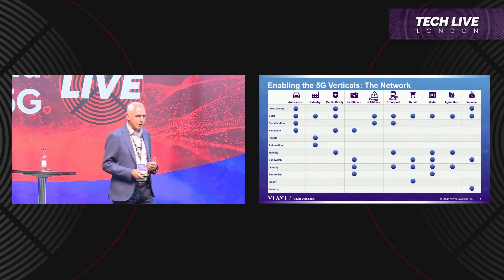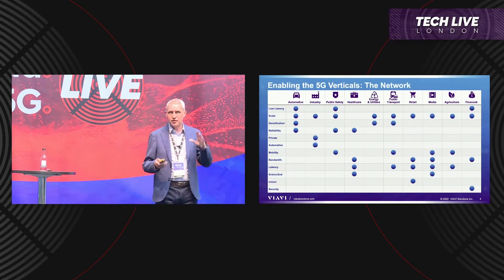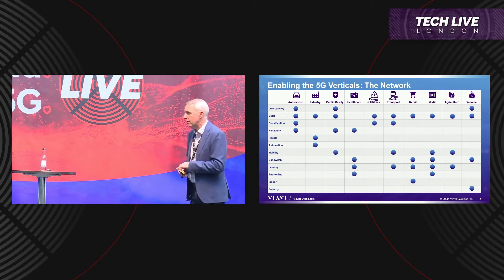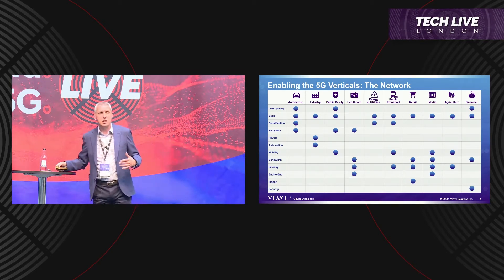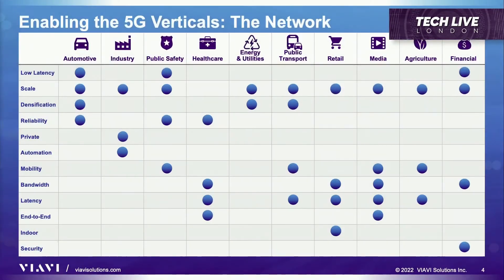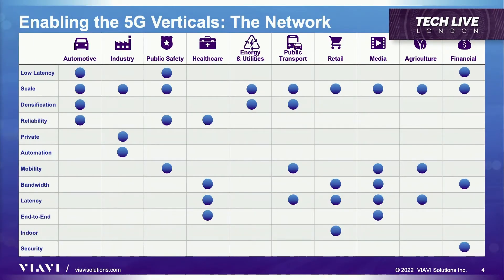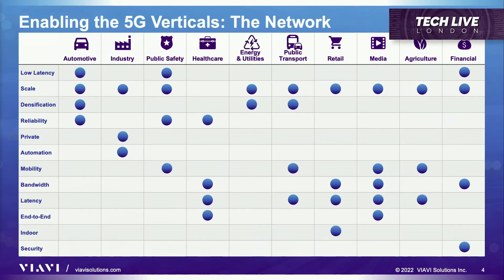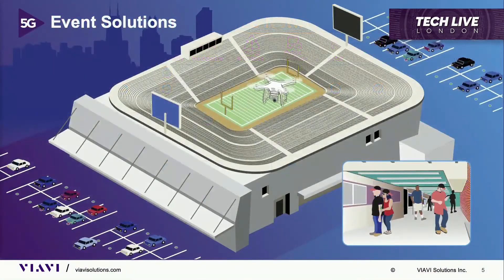When enabling the 5G verticals, there are lots of different elements to think about — often with disparate components affecting the network itself. Whether it's latency, scalability, reliability, end-to-end requirements, or private security aspects, they all have different needs and will all be vying for resources across the same physical network.